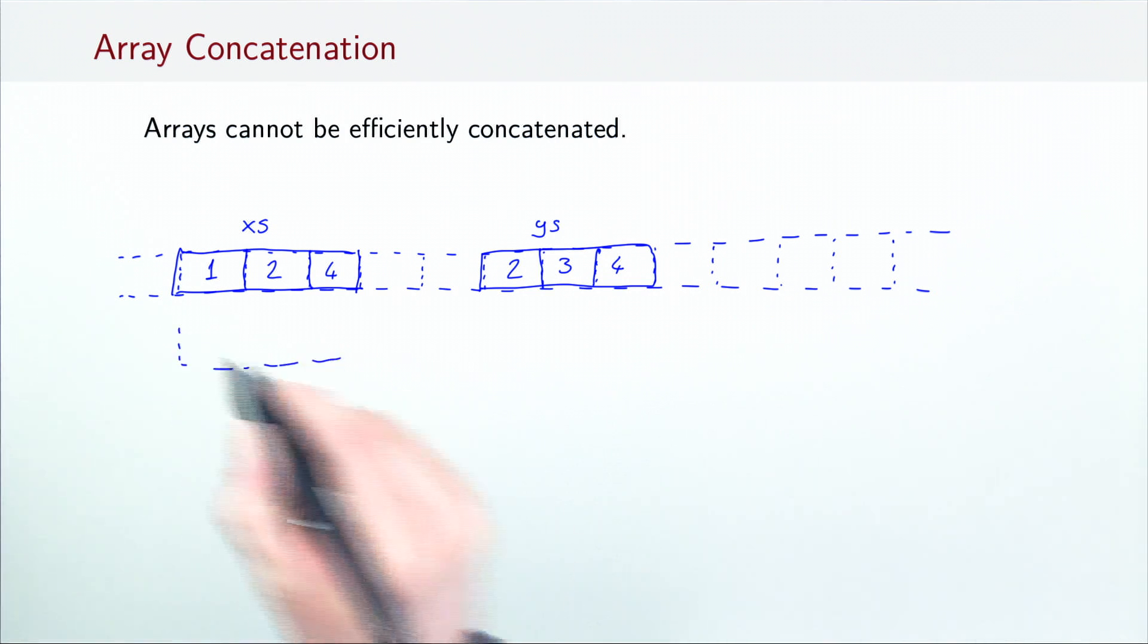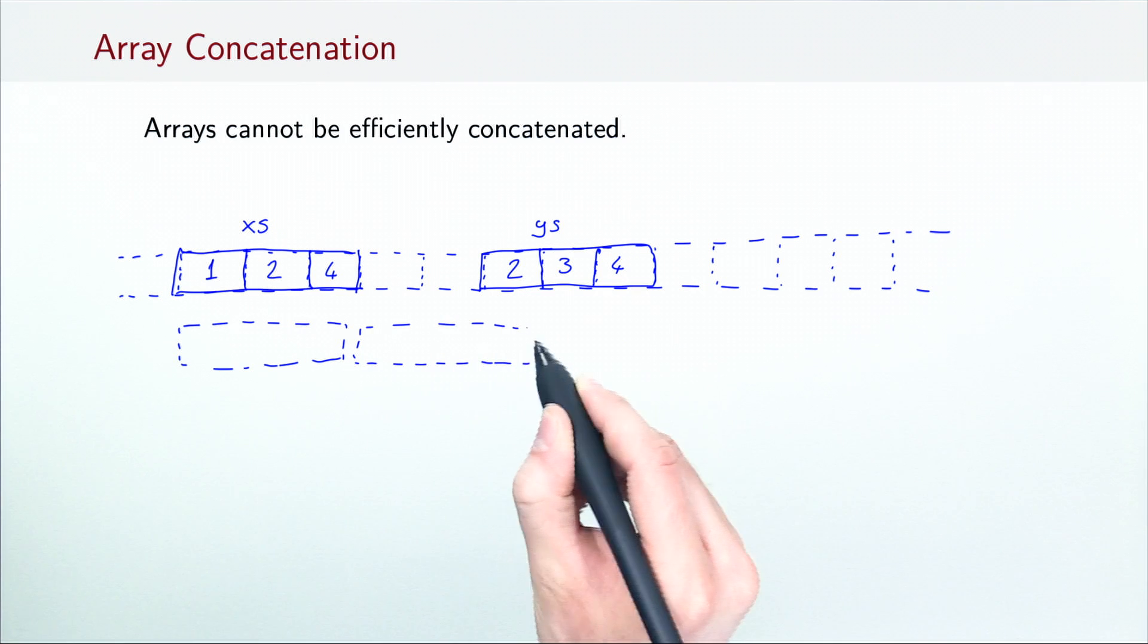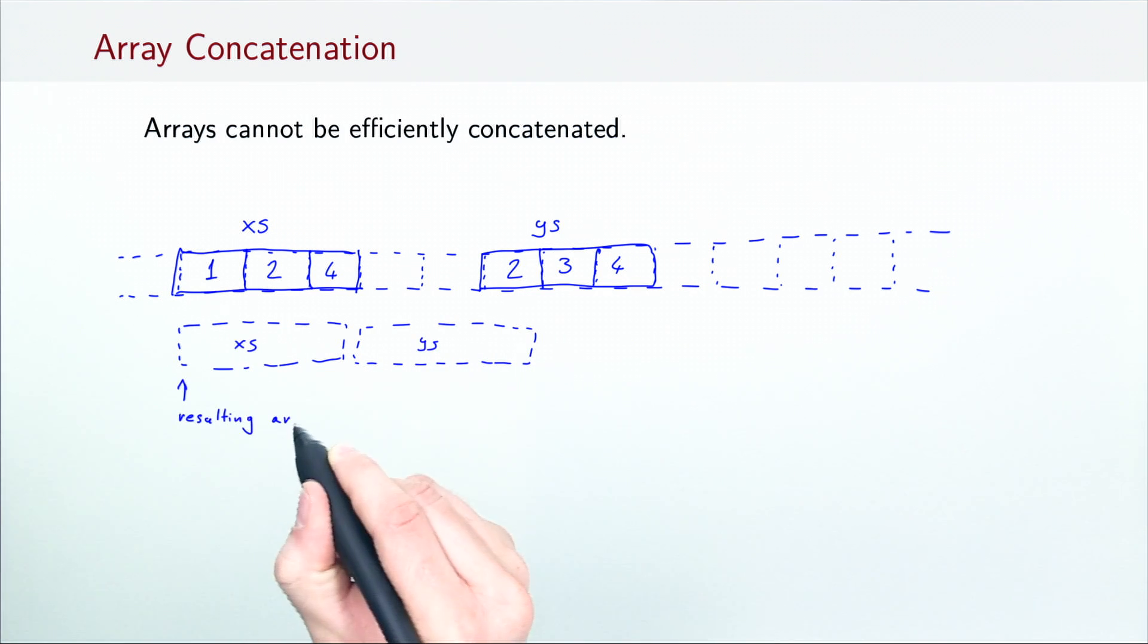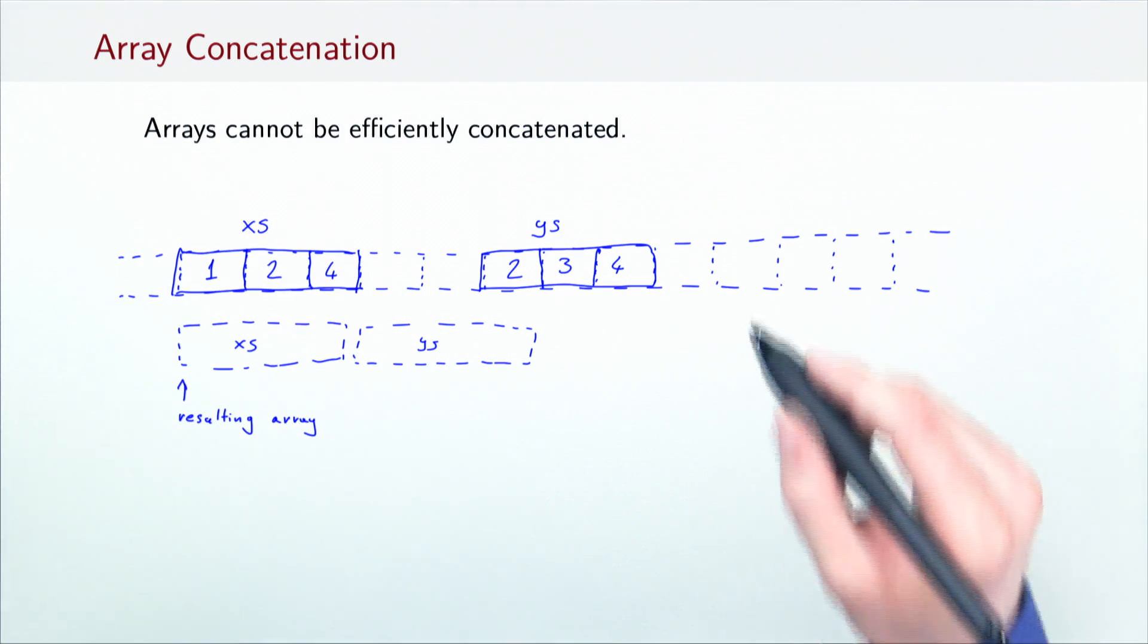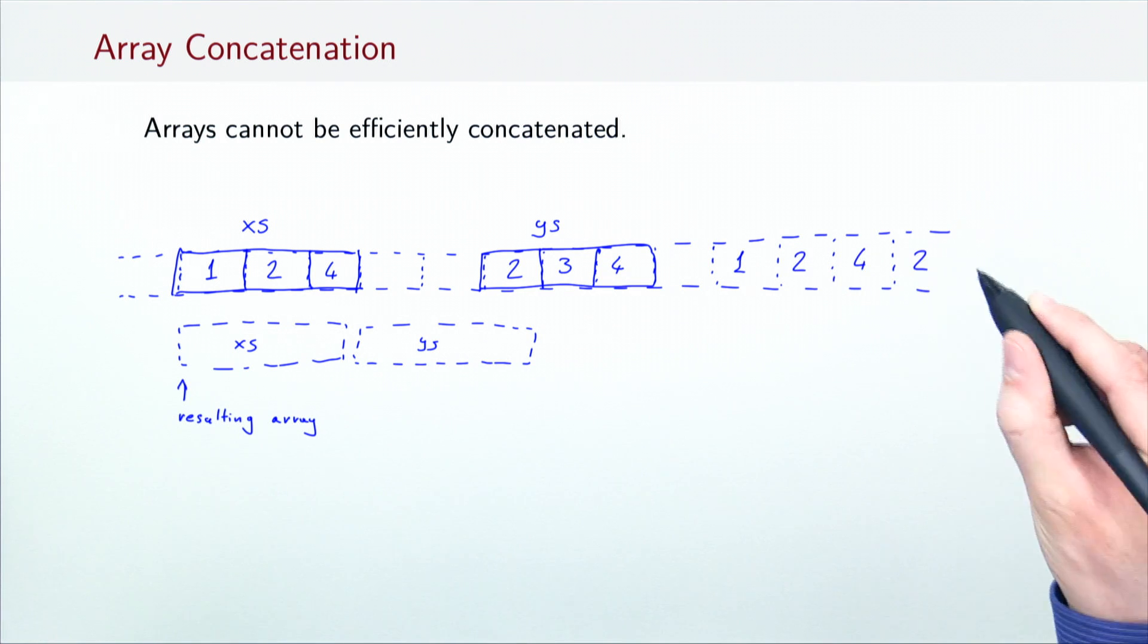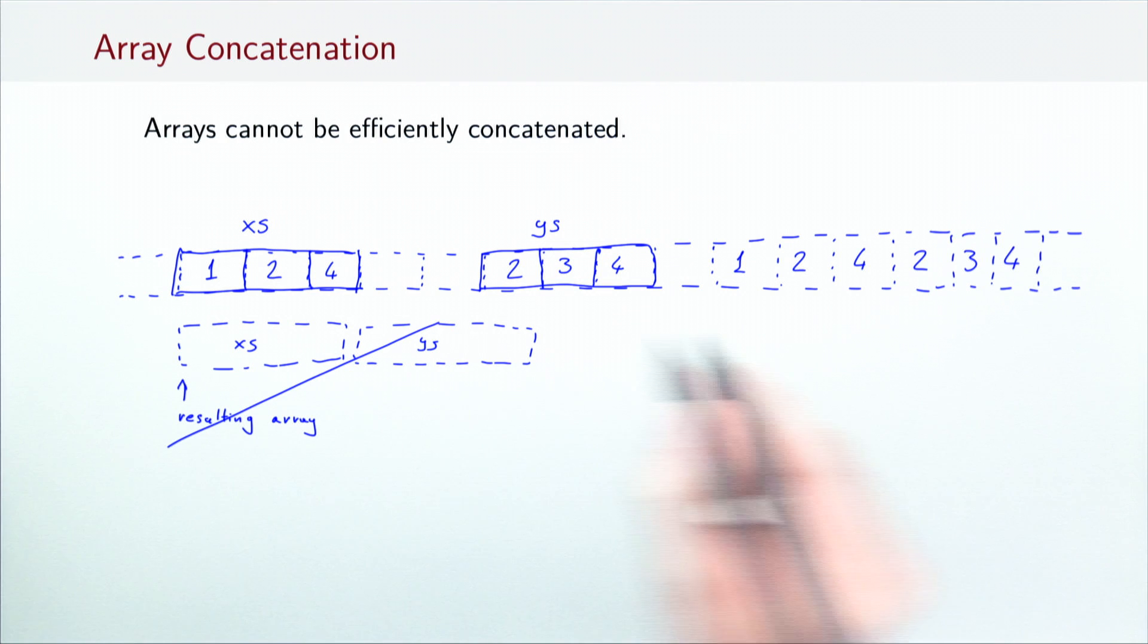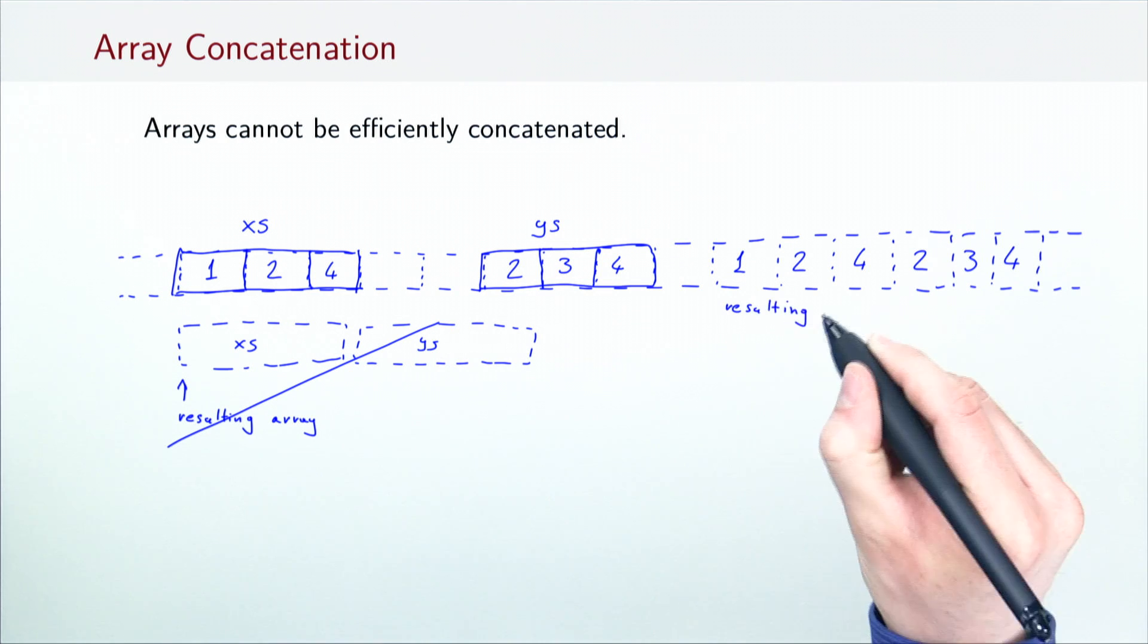The resulting array must also be a contiguous block of memory. If Xs and Ys were adjacent, we could return the resulting array by pointing to the start of Xs. In this case, we would not need to copy anything. However, Xs and Ys could be anywhere, so we are forced to copy their elements to produce a contiguous, uninterrupted block.